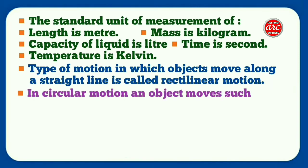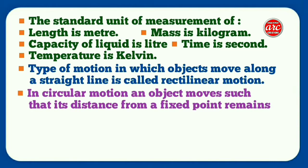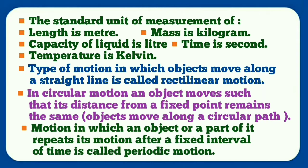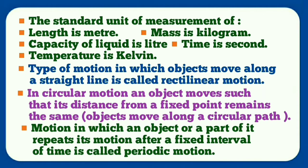Type of motion in which objects move along a straight line is called rectilinear motion. In circular motion an object moves such that its distance from a fixed point remains the same. Motion in which an object or a part of it repeats its motion after a fixed interval of time is called periodic motion.